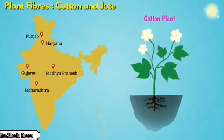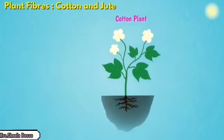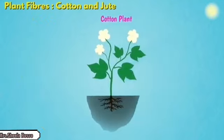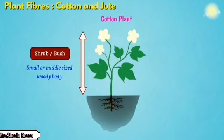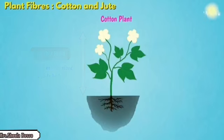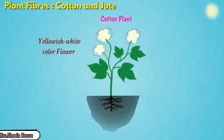That's why cotton grows in Punjab, Haryana, Madhya Pradesh, Gujarat, Tamil Nadu, Maharashtra, and Andhra Pradesh. In these areas cotton grows well because they contain more black soil. It is a bushy plant — a small plant with a woody stem, which is why we call it a shrub.